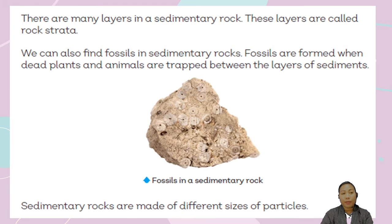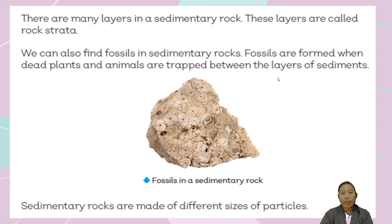There are many layers in sedimentary rocks because different kinds of particles are being squeezed and layered together. These layers are called rock strata. We can also find fossils in sedimentary rocks. Fossils form when dead plants and animals are trapped between layers of sediments, like these shells that have already fossilized.